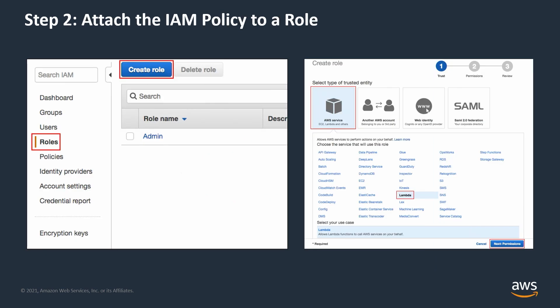Next, you attach the IAM policy to a role. Navigate to the IAM console and choose Roles in the navigation pane. Choose Create Role and for the entity, choose an AWS service called Lambda. On the Attach Permissions Policies page, enter the name of the policy that you created. You've just attached the policy you created earlier to a new IAM role which can now be used by a Lambda function.